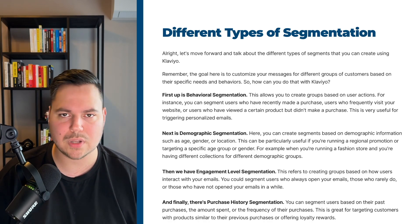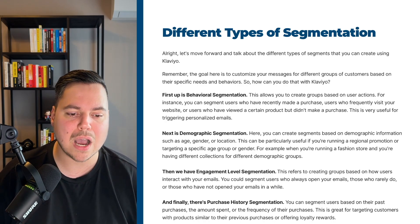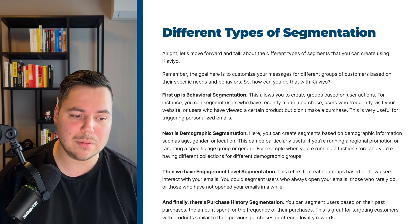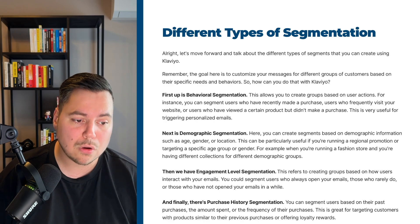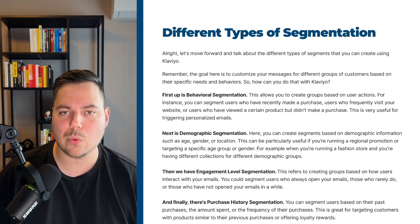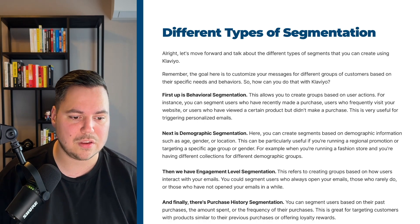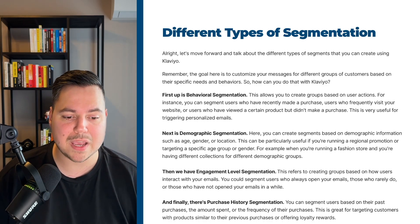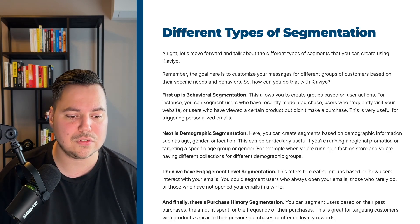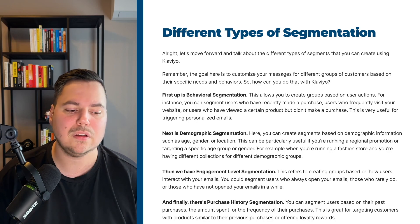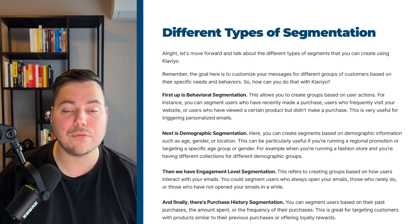Then we have engagement level segmentation, which refers to creating groups based on how users interact with your emails. You could segment users who always open your emails, those who rarely do, or those who haven't opened your emails in a while. And finally, there's purchase history segmentation — you can segment users based on their past purchases, the amount spent, or the frequency of their purchases. This is great for targeting customers with products similar to previous purchases or offering loyalty rewards.